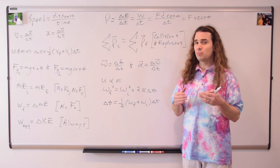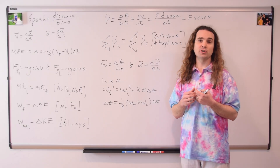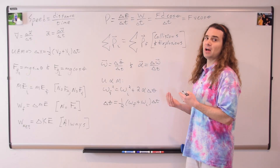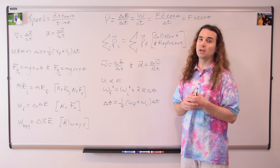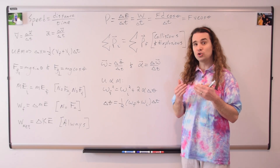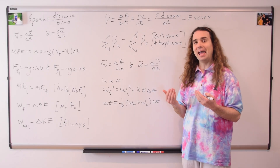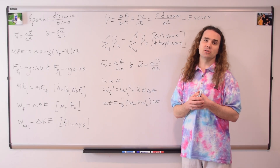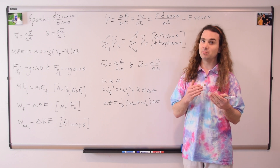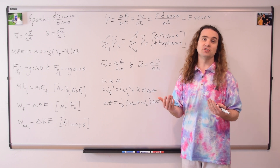For some reason, two uniformly angularly accelerated motion equations did not make the equation sheet: angular velocity final squared equals angular velocity initial squared plus two times the angular acceleration times angular displacement, and angular displacement equals one-half times the quantity (angular velocity final plus angular velocity initial) times change in time.